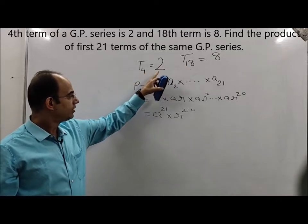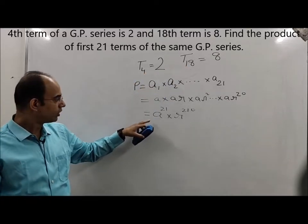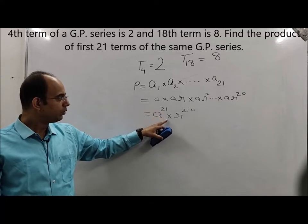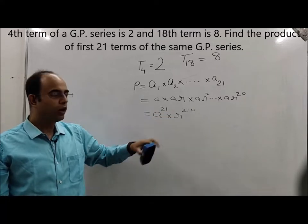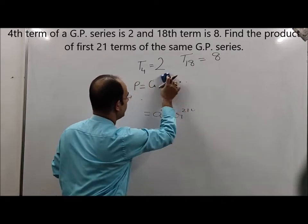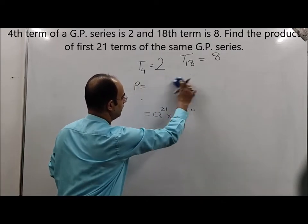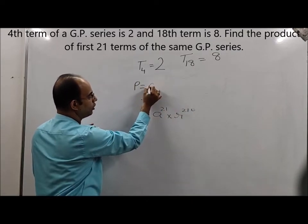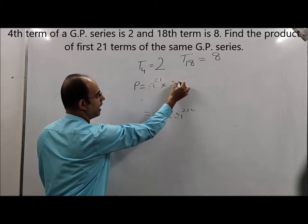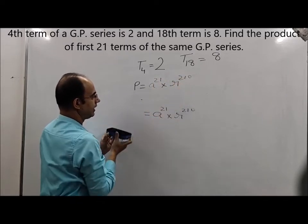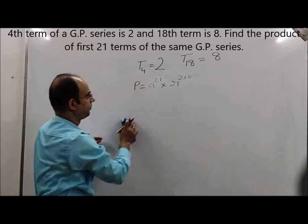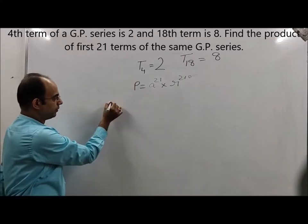So you need to find the value of a²¹ into r²¹⁰. Bear this in mind while solving. We need to find out the value of a²¹ · r²¹⁰.